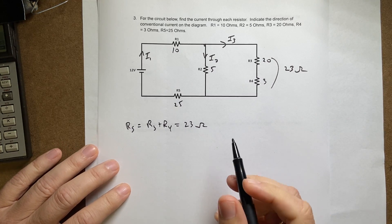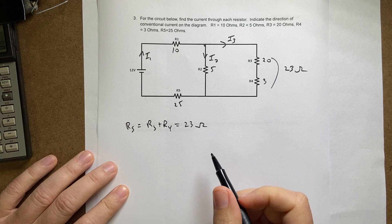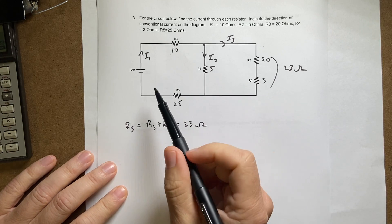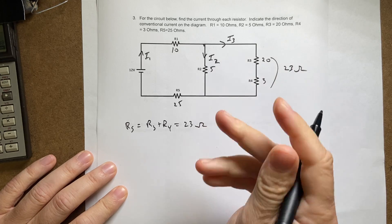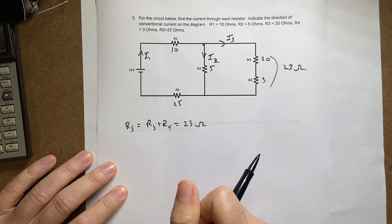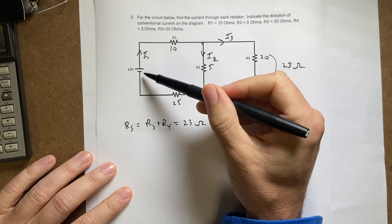Next, I'm going to write down—look, I have one current, two currents, three currents. I have three currents, so I need three equations. Let's start with a loop, this loop.